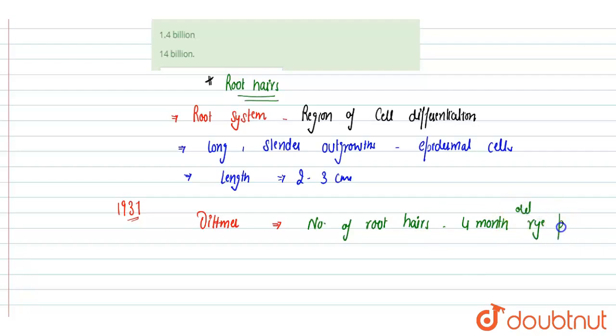And it was estimated to be, the number of root hairs that was found to be 14 billion. That was 14 billion. That's why it is known as Ditmer's four-month-old rye plant.